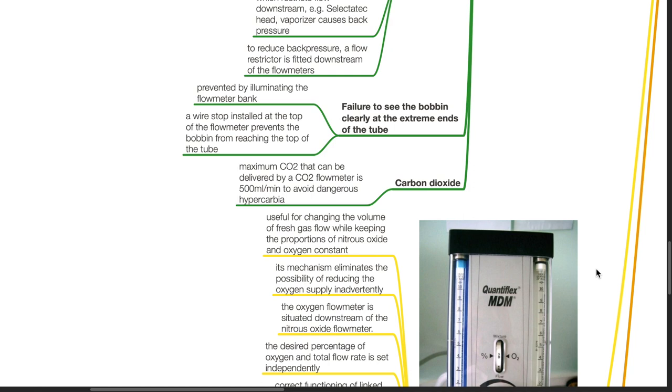Carbon dioxide: Maximum carbon dioxide that can be delivered by a carbon dioxide flow meter is 500 mls per minute to avoid dangerous hypercarbia.